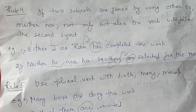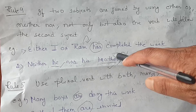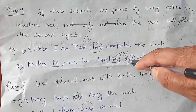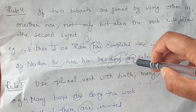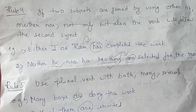Another example for rule four: 'Neither he nor his brothers are selected for the match.' Here the verb follows the second subject 'brothers,' which is a plural noun. Since 'brothers' is plural, the plural verb 'are' is used.